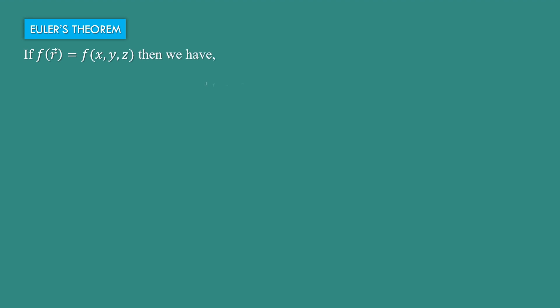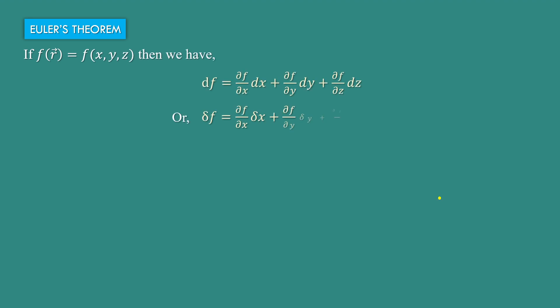Euler's theorem. If f is a function of x, y, z, then we have df equal to del f by del x into dx plus del f by del y into dy plus del f by del z into dz. Or we can write in terms of delta f equal to del f by del x into delta x plus del f by del y into delta y plus del f by del z into delta z.